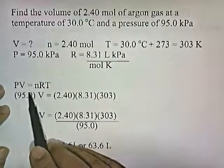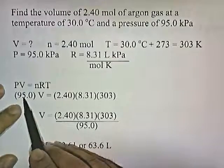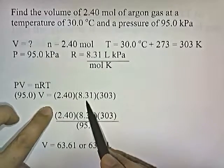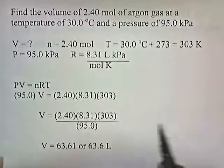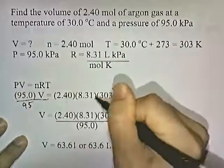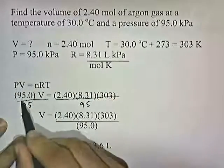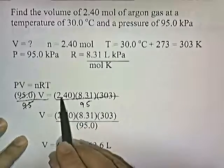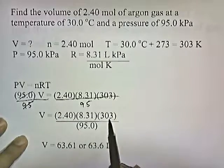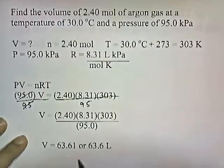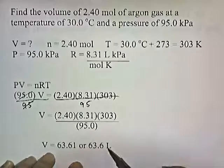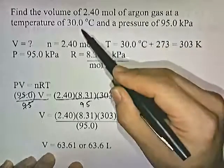So, PV equals NRT. P is 95, V is unknown, N is 2.4, R is 8.31, and T is 303. To isolate V and get it by itself, we divide both sides by 95. V equals 2.4 times 8.31 times 303 divided by 95. We get 63.61 or 63.6 liters. That's how much space the gas would take up if you have that many moles of gas in the balloon at that temperature and pressure.